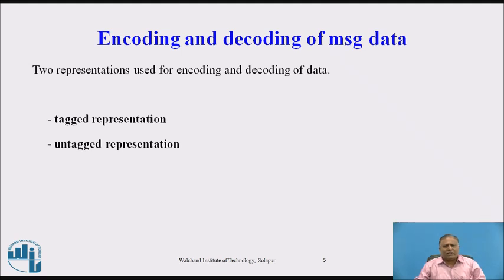Encoding and decoding of message data. Two types of representations are used: tagged representation and untagged representation. In tagged representation, the type of program object along with its value is encoded in the message. In untagged representation, the message data contains only program objects, and the receiving process must have prior knowledge of how to decode the data. Both sender and receiver must carefully be aware of the format of data encoded in the message.